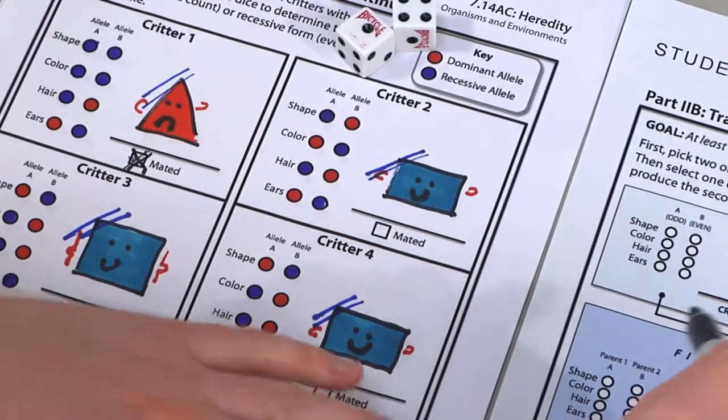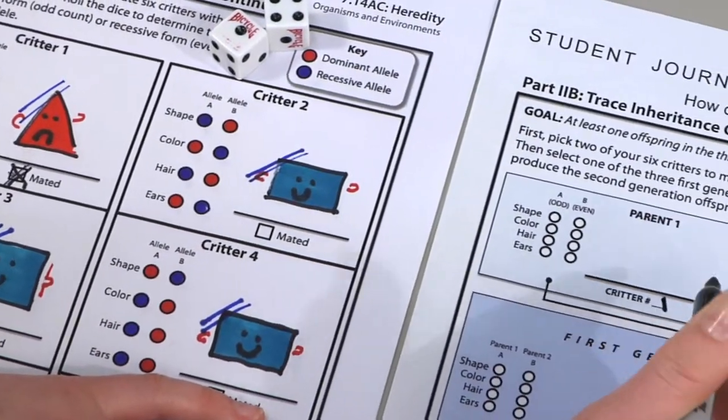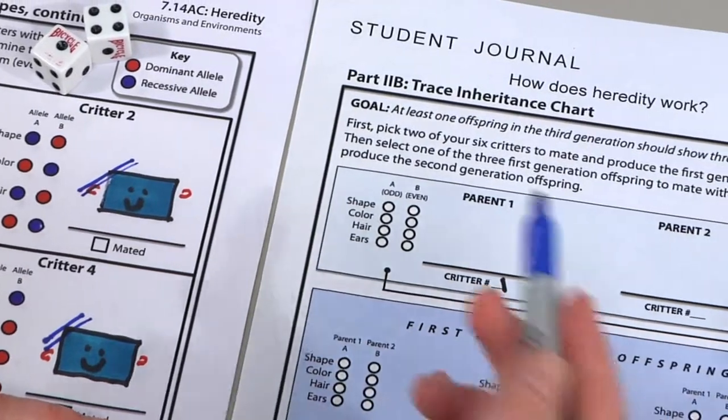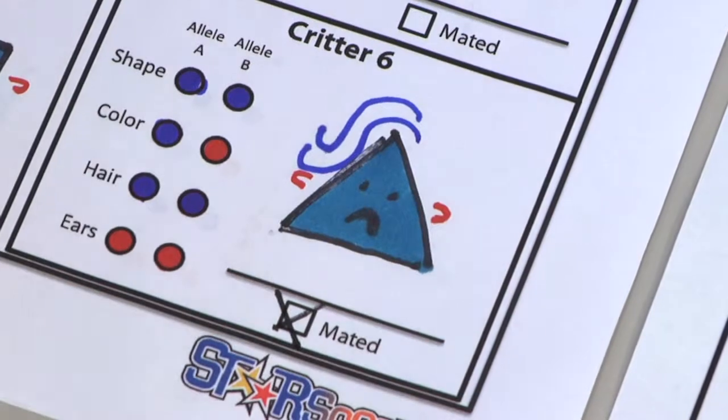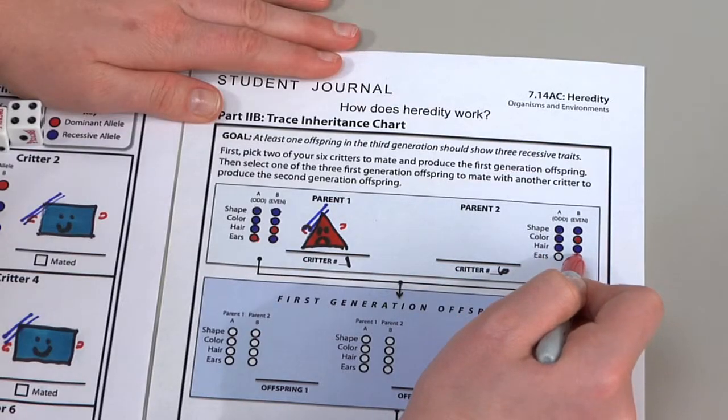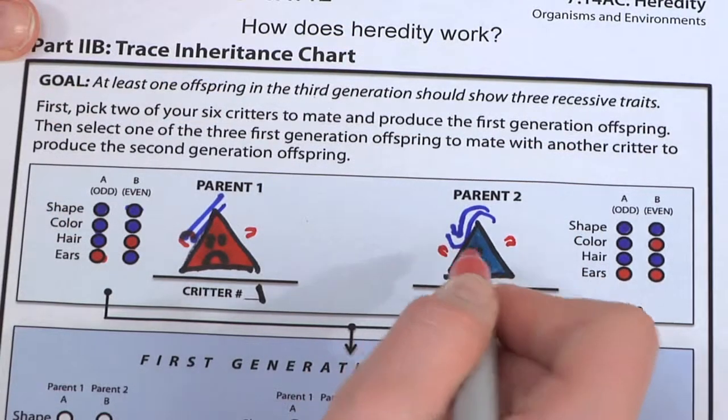Use the six critters to produce three generations of offspring. For the parents of the first generation of offspring, select two critters and mark them as mated.